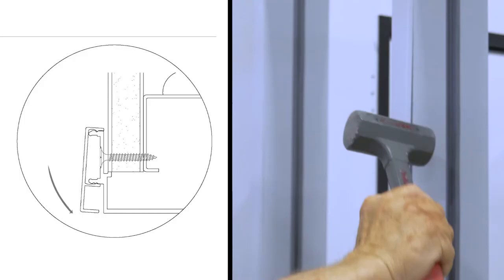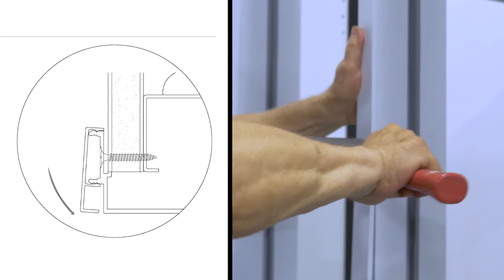Install by hooking the outside legs and lightly tapping towards the inside edge. When the trim snaps on, it should fit snugly.